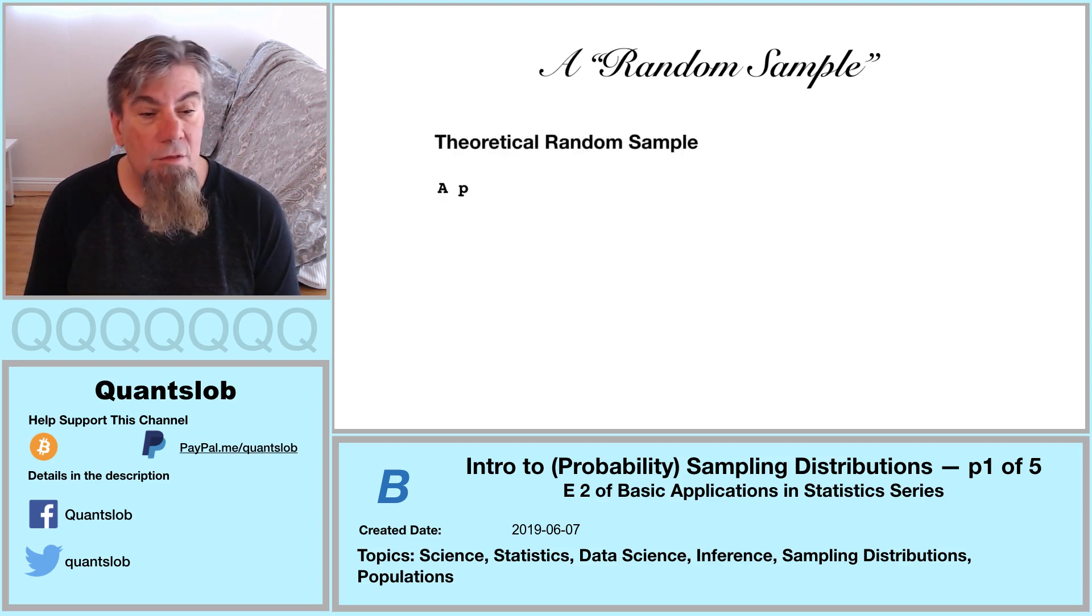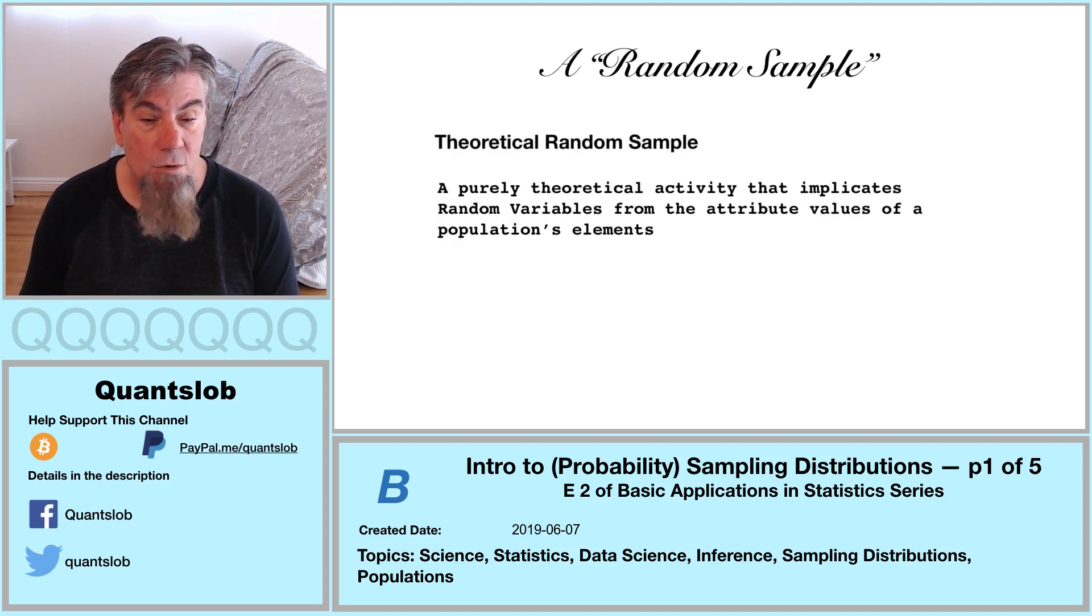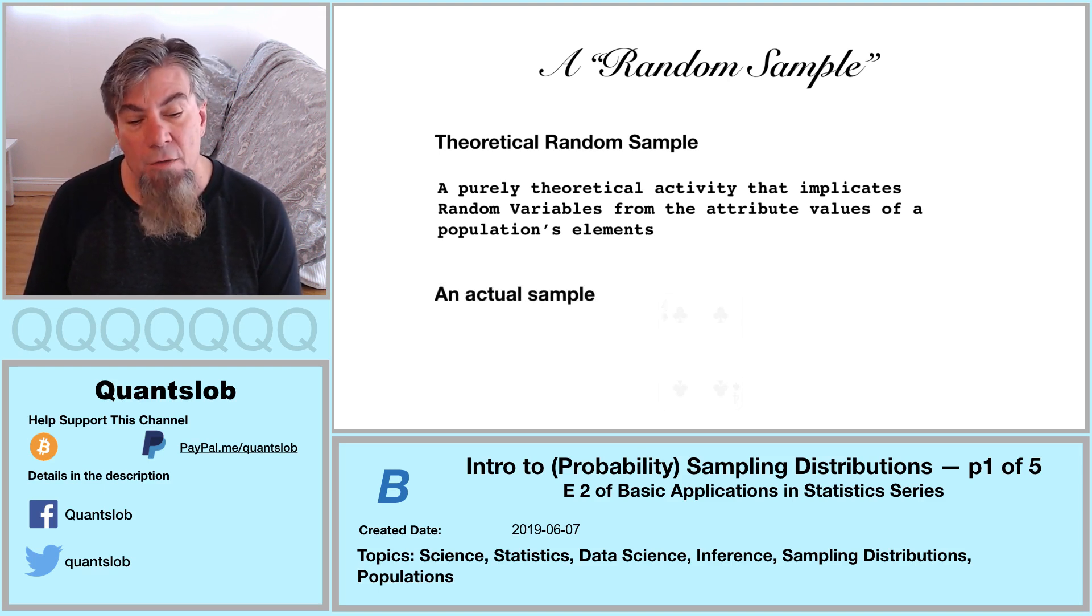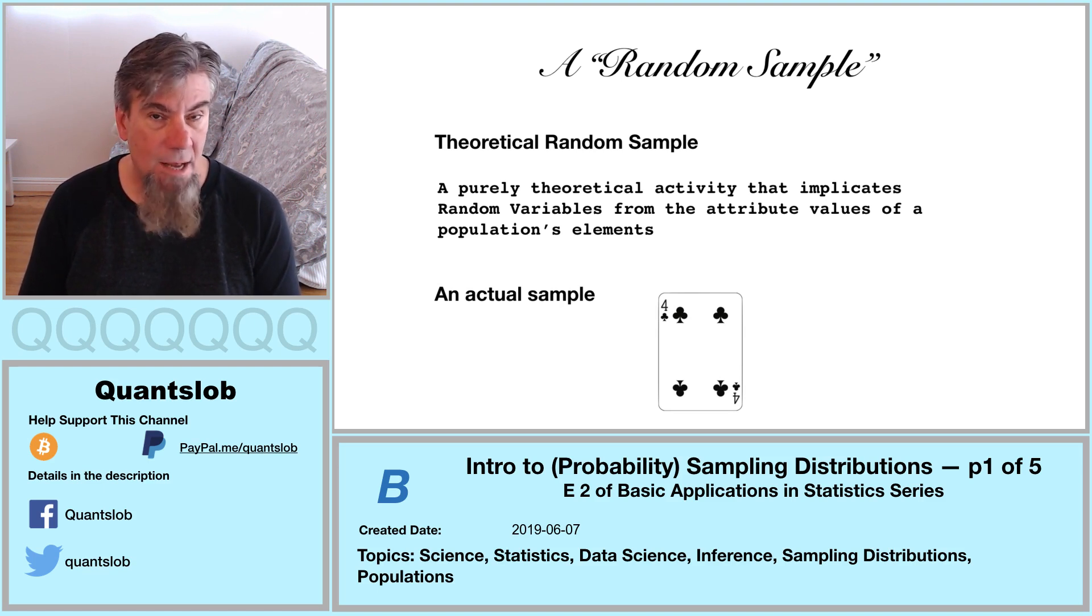If you recall, a theoretical random sample refers to a purely imaginary activity. A theoretical random sample implicates random variables from the fixed attribute values of a population's elements. On the other hand, of course, the term random sample can simply refer to an actual sample.